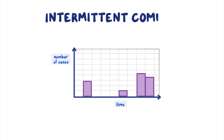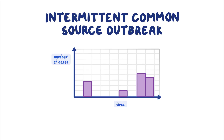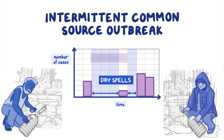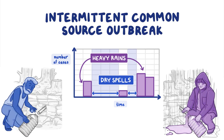The epi curve for an intermittent common source outbreak usually includes multiple peaks with valleys when there are fewer or no cases. For example, consider a roadside spring that becomes contaminated after heavy rains. People who go during dry spells are fine, but those who go after heavy rain become ill from the water. Only one source is involved, but the infectious agent is not always present—it is intermittent, meaning it happens once in a while and not at regular intervals. The epi curve would represent a series of cases peaking after heavy rains with few or no cases during dry periods.